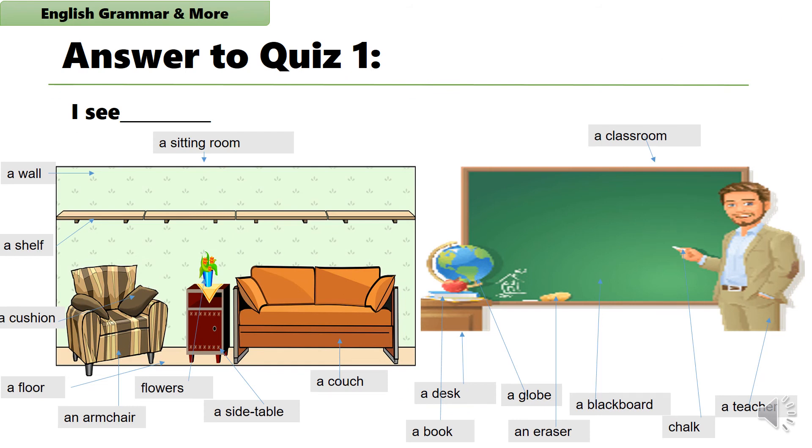All right. I hope you finished quiz one. Here are the correct answers. In the first picture, I see a sitting room. I see a wall. I see a shelf. I see a cushion. I see a floor. I also see an armchair. I see flowers. I see a side table. I also see a couch.